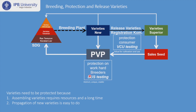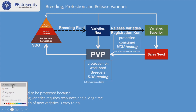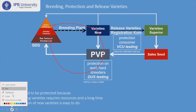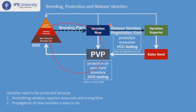The DUS testing — Distinct, Unique, and Stable — is applied, and the result can also be considered a genetic resource. However, with only this scheme you cannot sell it commercially, because this scheme is only to protect the breeder. To get permission to distribute commercially, you need to do variety release, which makes it a superior variety and commercial seed.